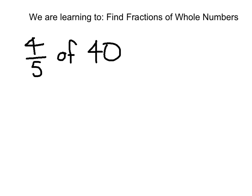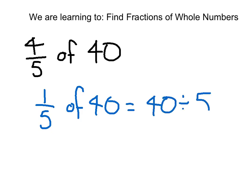In order to work this out, we need to first work out what 1/5 of 40 is. We could write that as 1/5 times 40 as well. So we work this out: 40 divided by 5, and we know that that is 8.